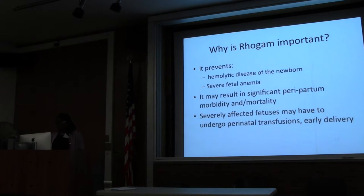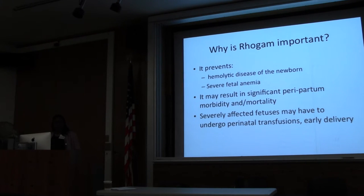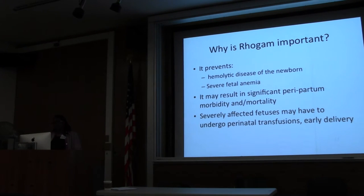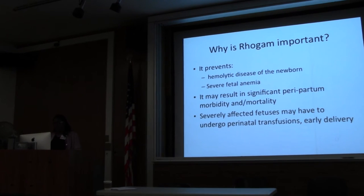RhoGAM prevents hemolytic disease of the newborn and fetal anemia, which can result in significant peripartum morbidity and mortality for the baby. If mom becomes allo-immunized, it doesn't affect that pregnancy but will affect subsequent pregnancies. Before RhoGAM was instituted, women who had one child then kept having losses because they were allo-immunized.